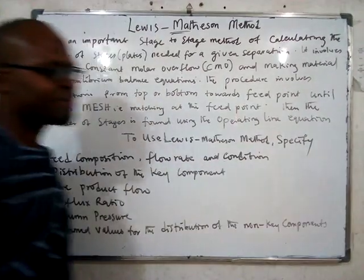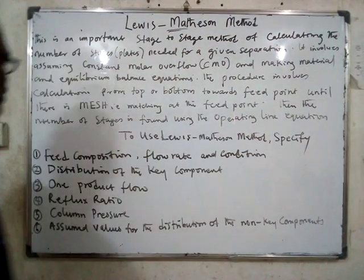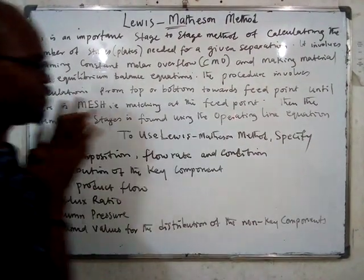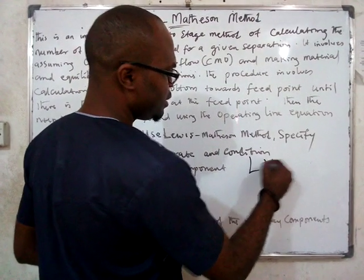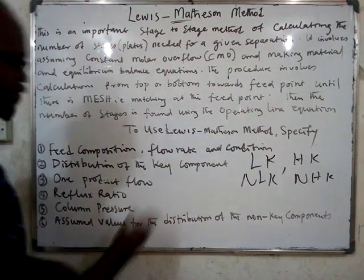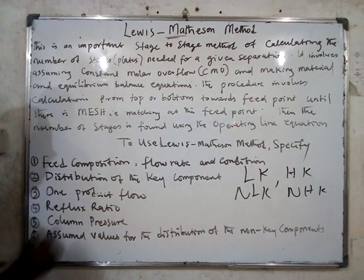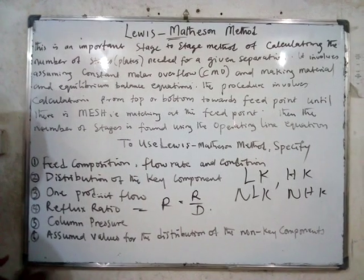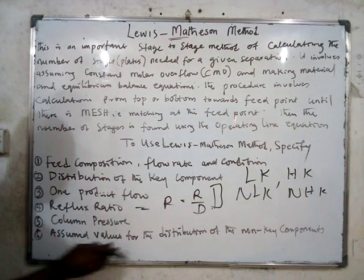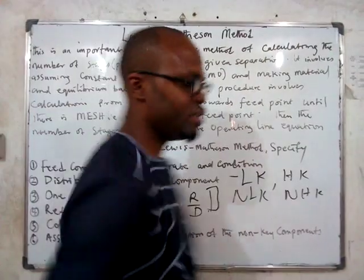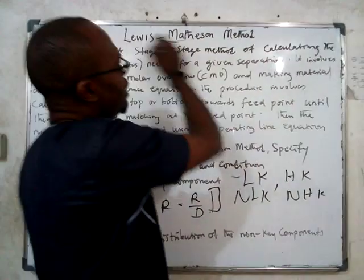To use the Lewis-Methason method, there are things that must be specified. First, the feed composition — you must state what the feed is composed of, including flow rate and composition. Second, the distribution of the key components — you must identify the light key component and the heavy key component, as well as the non-light key and non-heavy key. Third, the product flow rates. Fourth, the reflux ratio — very important, that is reflux over distillate. Fifth, the column pressure. Sixth, the assumed value for the distribution of the non-key components.